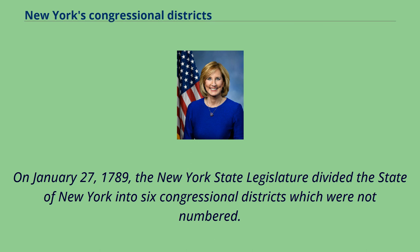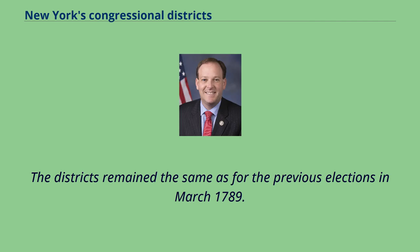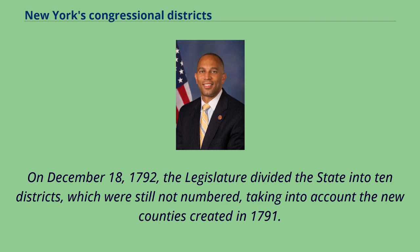On January 27, 1789, the New York State Legislature divided the state of New York into six congressional districts, which were not numbered. The districts remained the same as for the previous elections in March 1789. On December 18, 1792, the legislature divided the state into ten districts, which were still not numbered, taking into account the new counties created in 1791.